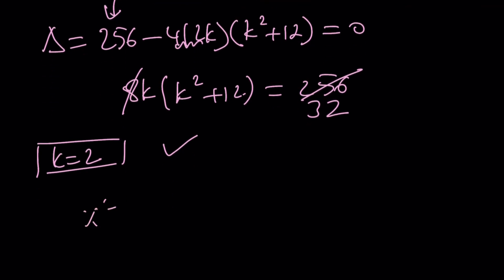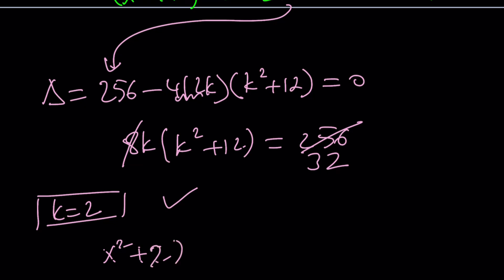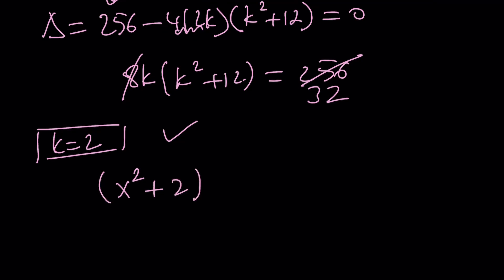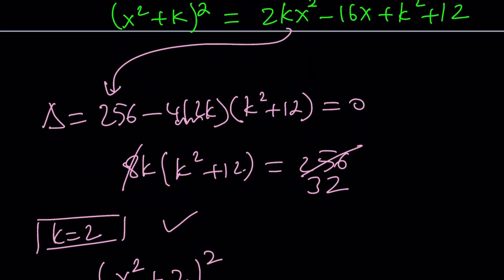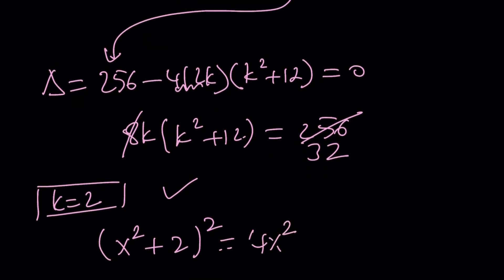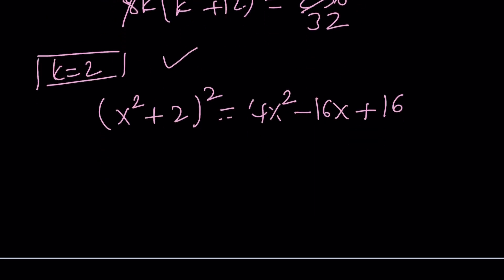But what happens is if k is equal to 2, then we get something like this. x squared plus 2 squared and then equals 2k, which is going to be 4x squared minus 16x plus k squared is 4 plus 12. That's going to be 16. Obviously, you can write this as 2x minus 4 quantity squared. And this will be x squared plus 2 squared.